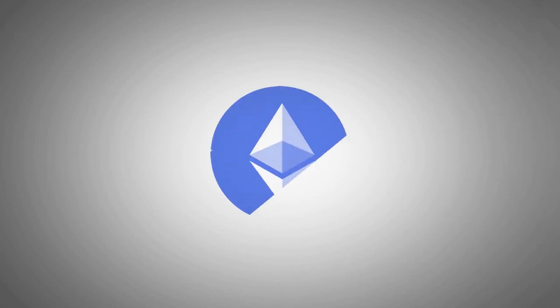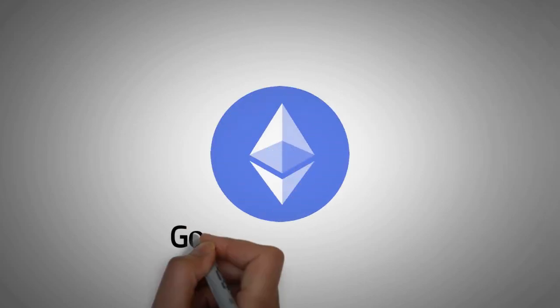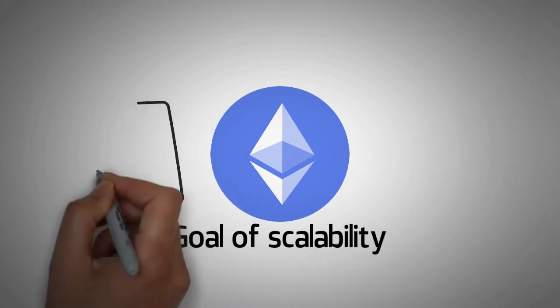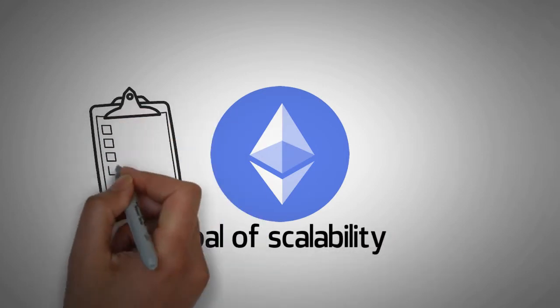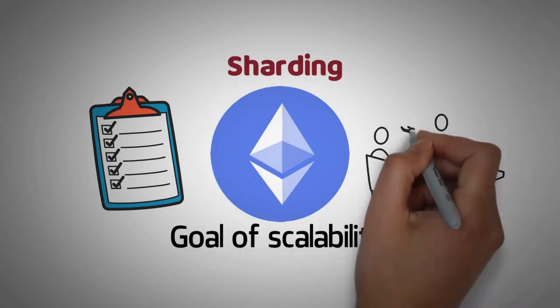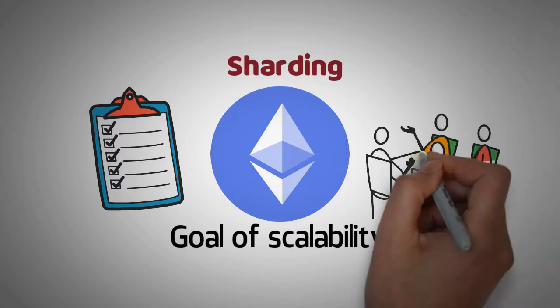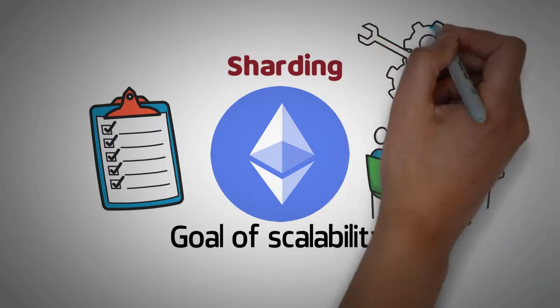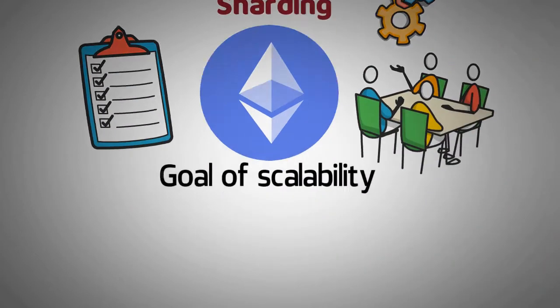Truth is, the Ethereum merge is only the first step towards our end goal of scalability. In order to truly scale, we need to take some smaller steps first. One of those steps is something called sharding. In this video, we'll talk about sharding, what it means, how it works, the risks involved, and ways it can improve the Ethereum network as a whole.